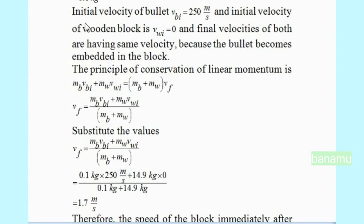Initial velocity of bullet VBI is equal to 250 meter per second and initial velocity of wooden block VWI is equal to 0 because the block is initially at rest. The final velocity of both are having same velocity because the bullet becomes embedded in the block. The principle of conservation of linear momentum is MB VBI plus MW VWI